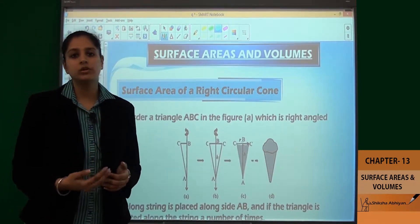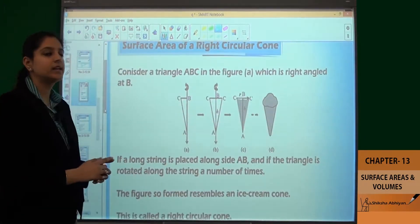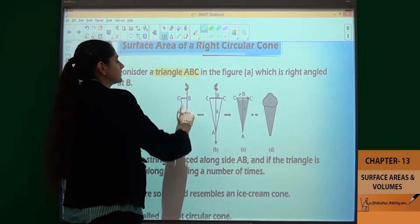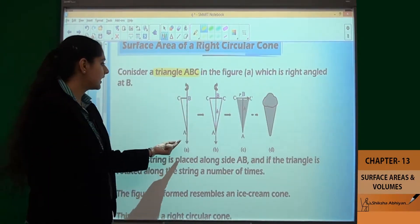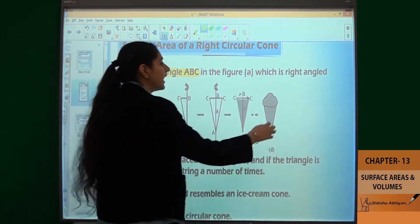Now, let us see how a right circular cone is formed. Consider a triangle ABC in the figure, which is right angled at B.